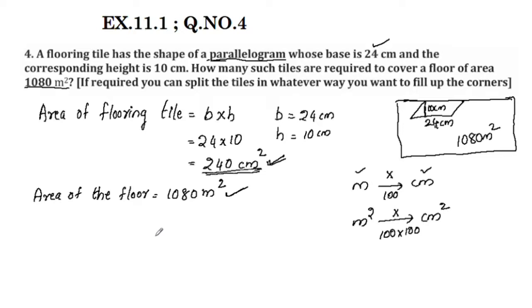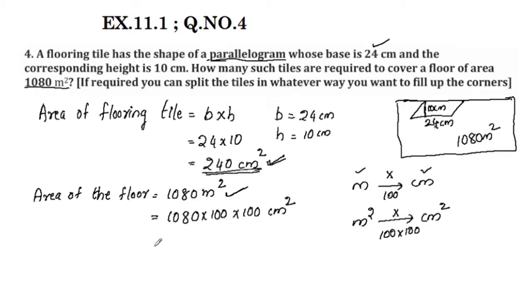We will convert 1,080 m² into centimeters squared by multiplying by 100 into 100. So 1,080 × 100 × 100.